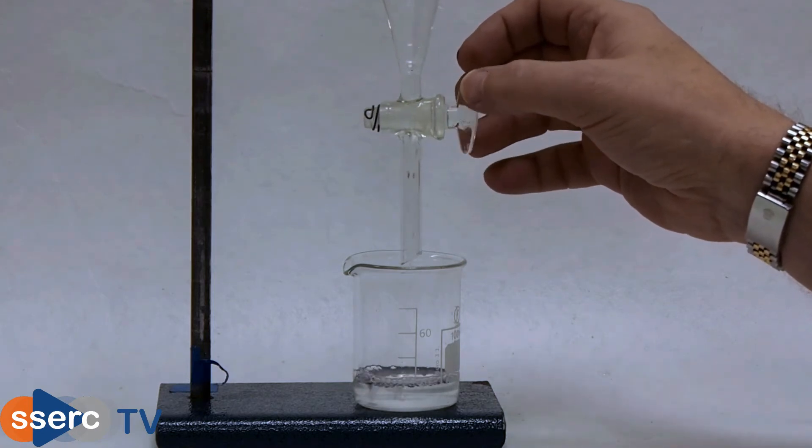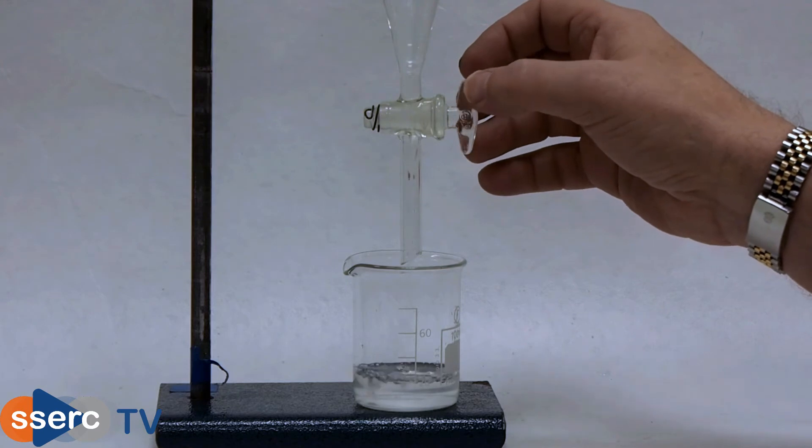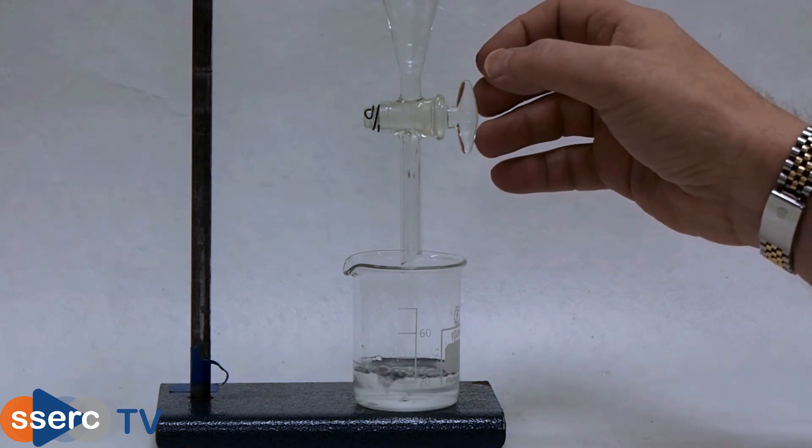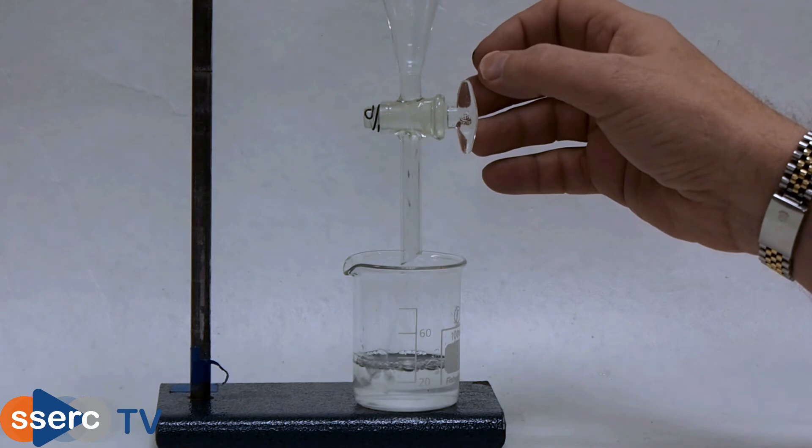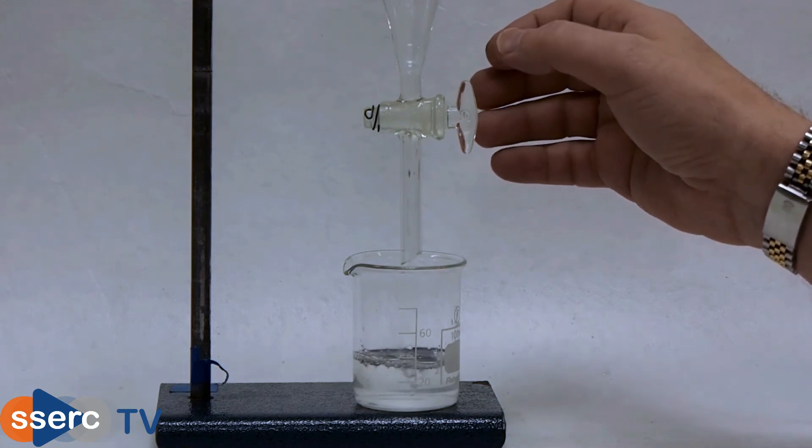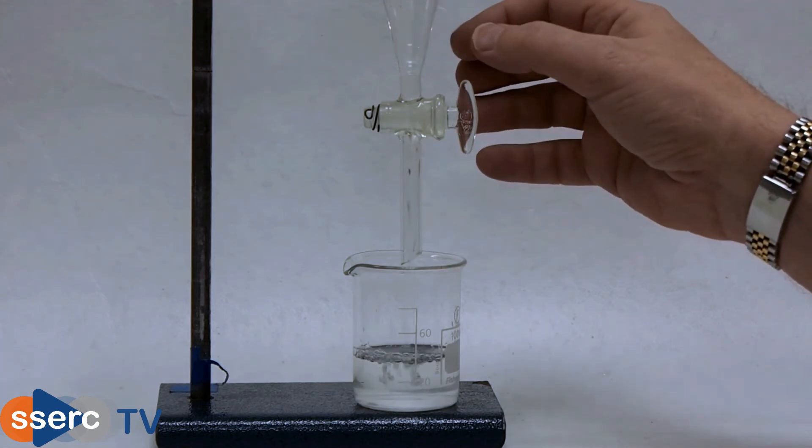Make sure you know which layer it is that you need. In this case we need to keep the top ethyl ethanoate layer. This has the caffeine in. However, it is important not to simply dispose of your aqueous layer.